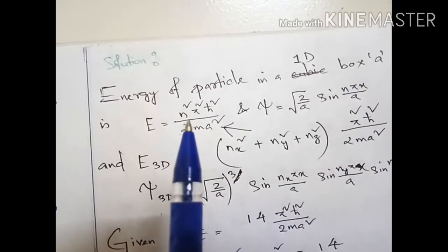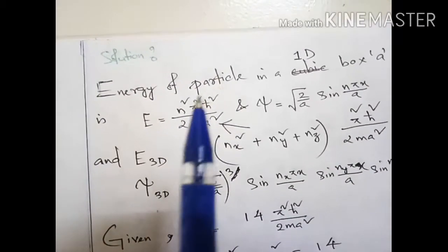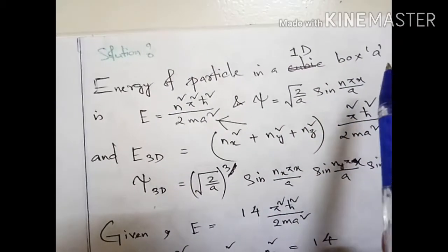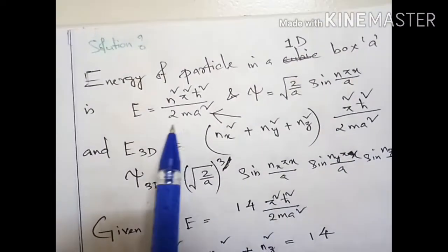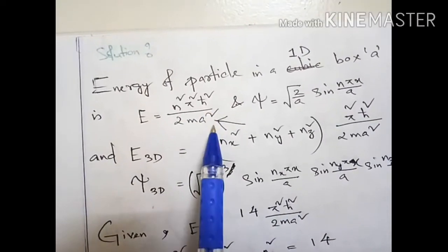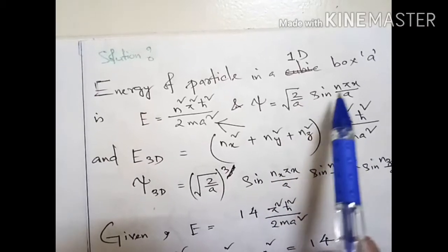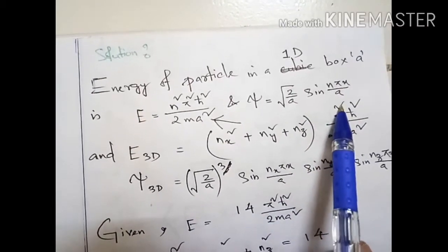This is a cubic box. So what is the energy in case of one dimensional box? If it is a one dimensional box of length a, the energy is n²π²ℏ²/(2ma²) and the corresponding wave function will be √(2/a) sin(nπx/a).